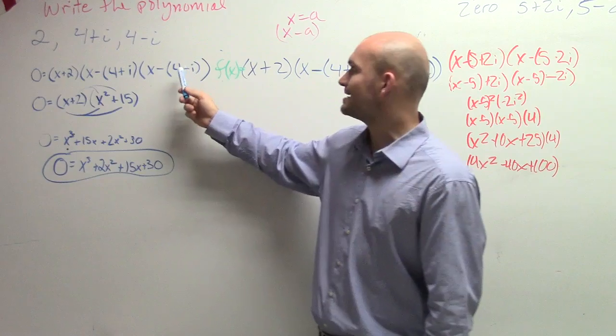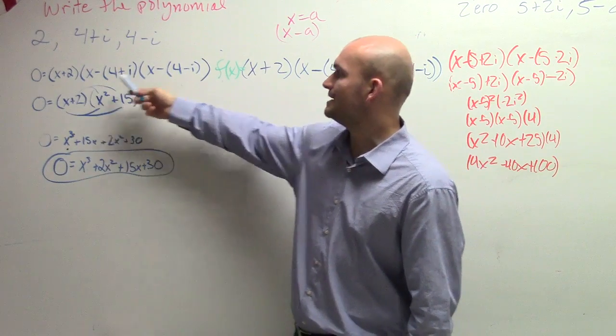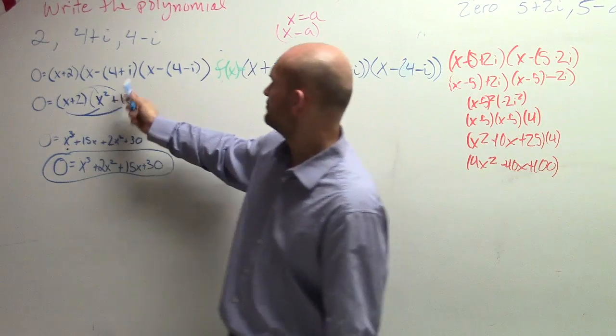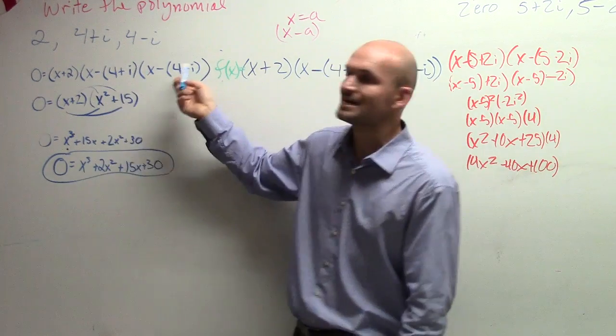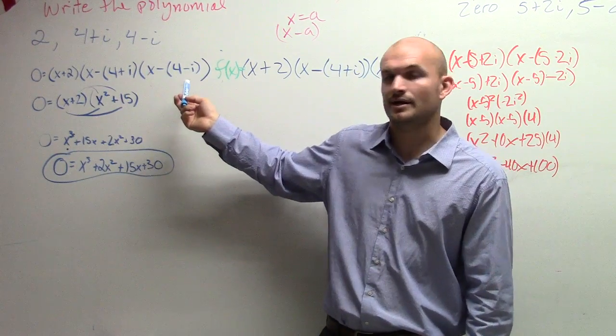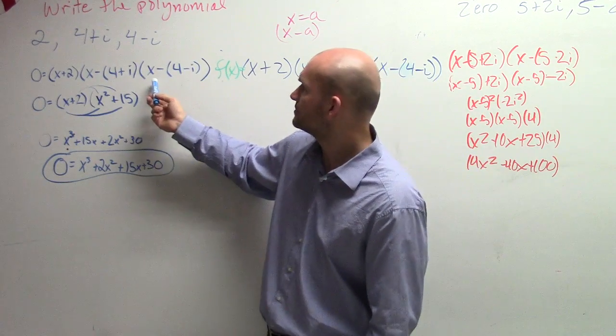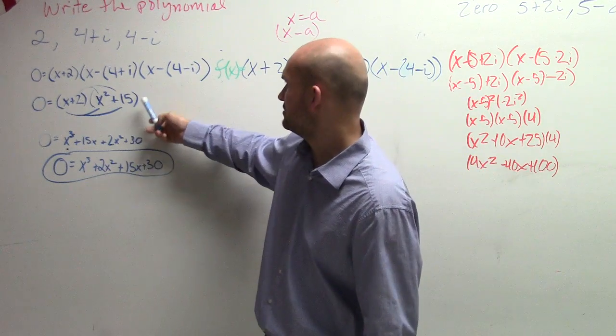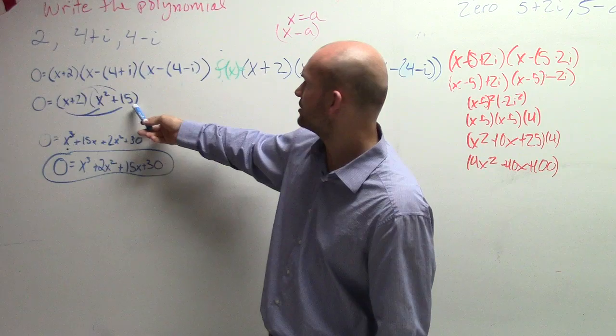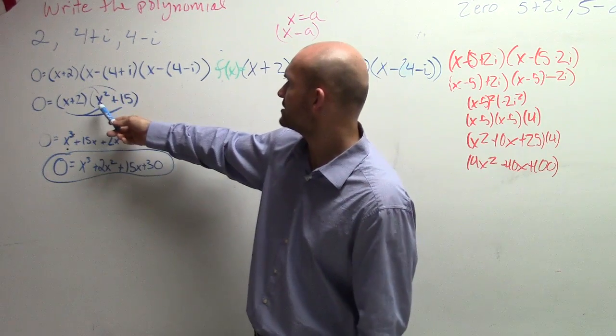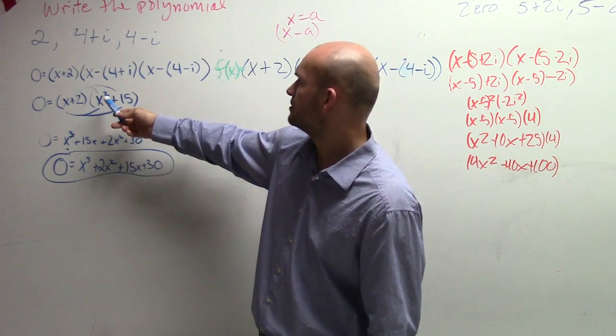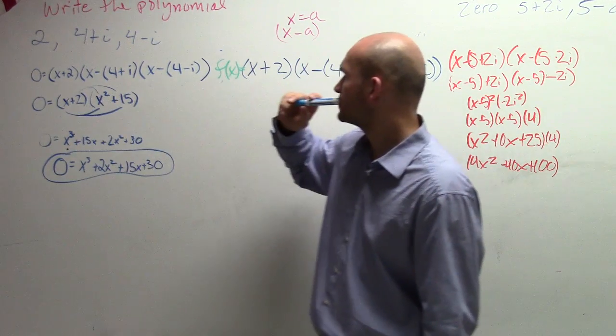But remember this is 4 plus i times 4 minus i. Actually we're going to get x plus 15. We're getting very close. But we made a mistake. x squared. Shouldn't it be x minus 2?